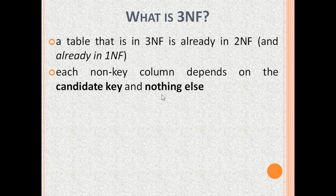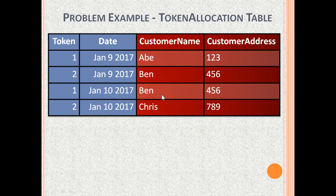Recall from the last video that candidate key means one or more columns whose value is unique in every row. Now let us see some examples of tables that are not in 3NF and how to convert them to 3NF.